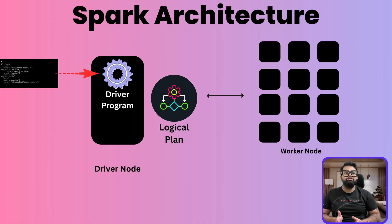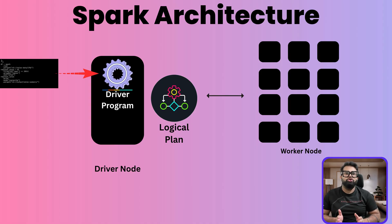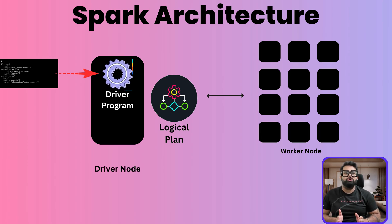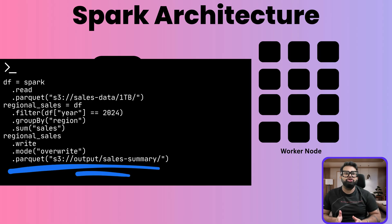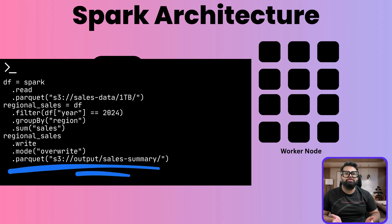But here is the first crucial thing you need to know: nothing runs yet. No data is read. No computation happens. This is because Spark is built on lazy evaluation — it only builds a plan. It doesn't execute anything until you call an action. The last line in your script is an action, and it changes everything.